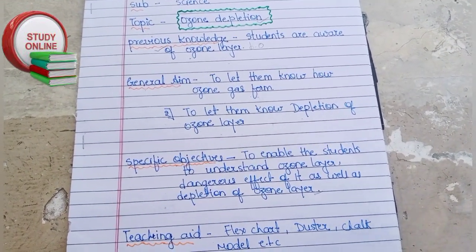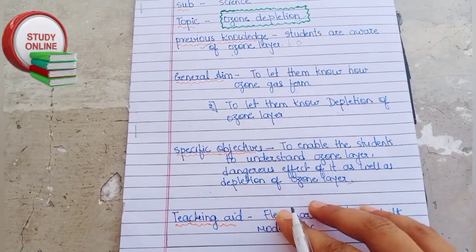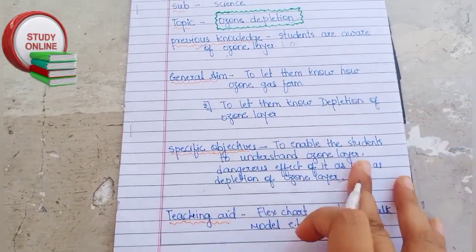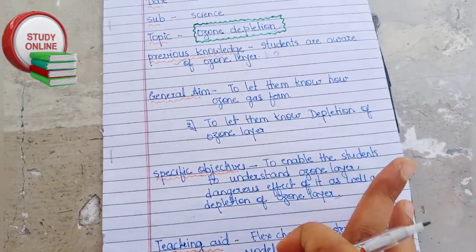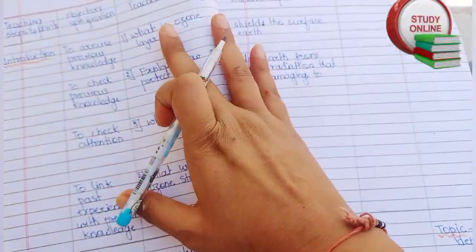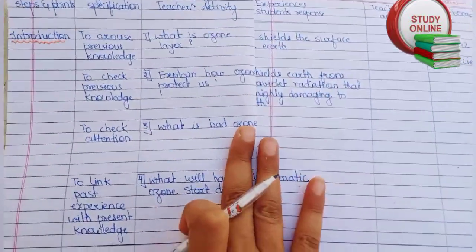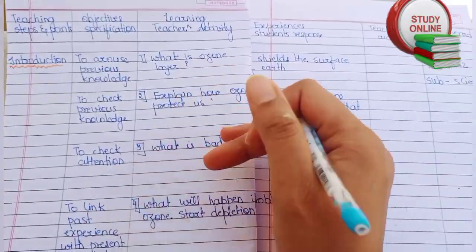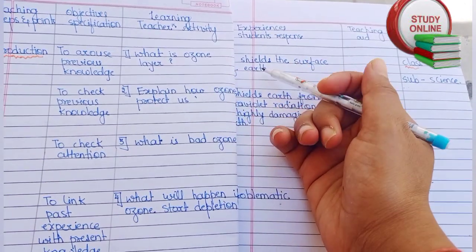For teaching aids, we have to write whatever teaching aids we are going to use while we teach. We have to mention items like flex chart, duster, chalk, model, etc. — whatever teaching aids we plan to use.